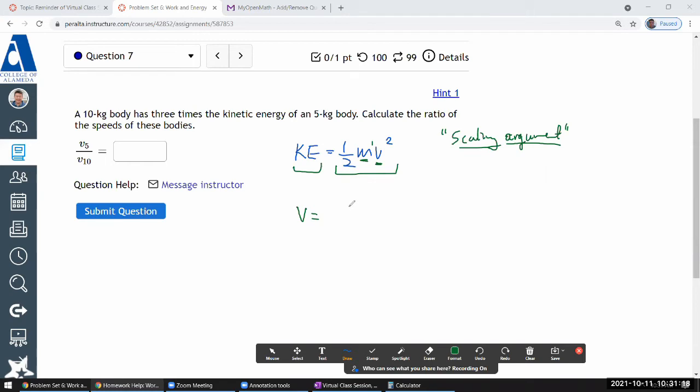So if I solve this for velocity, then I have 2KE over m square root of it. So I see that velocity, it goes as a square root of this ratio of things. So it goes as a square root of kinetic energy and goes as one over square root of mass.